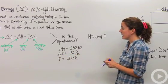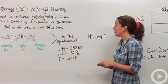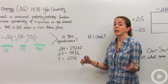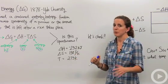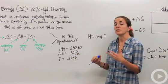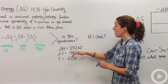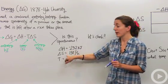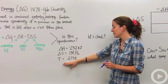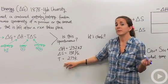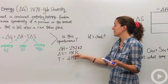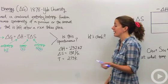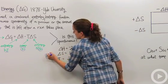Our delta S value is 138 joules per Kelvin — that's good, we increased disorder. We like increasing disorder; the universe likes to be more disorderly. So we have an exothermic reaction with high disorder at 273 Kelvin. My guess is yes, this reaction will be spontaneous.